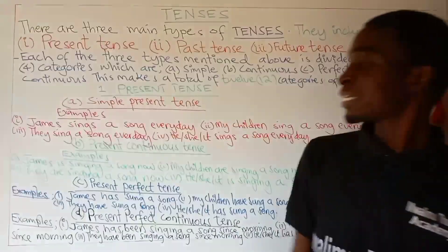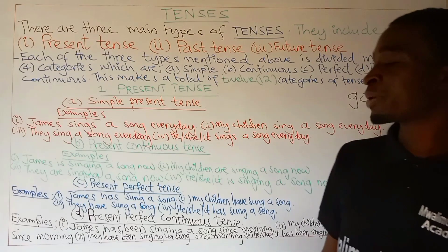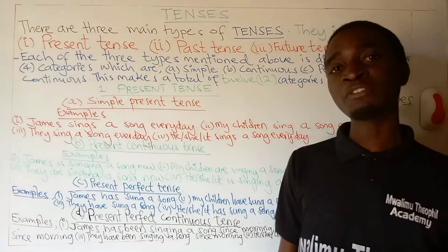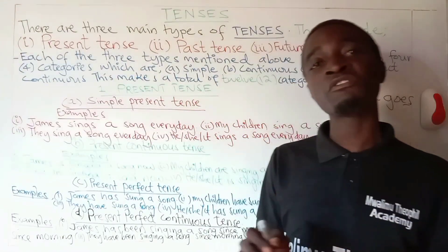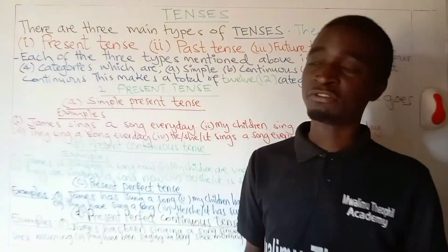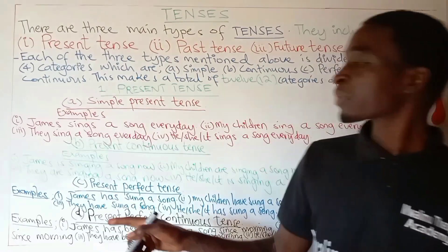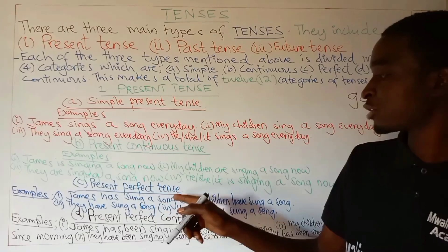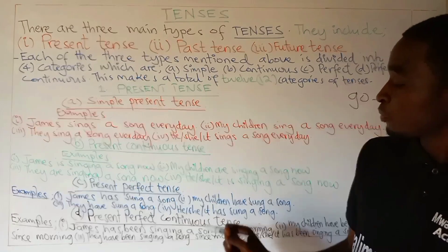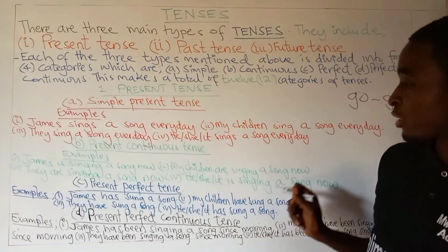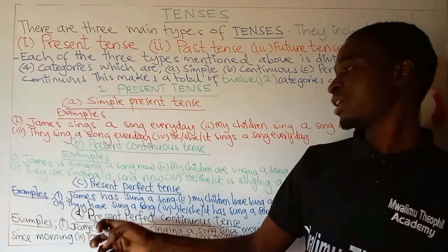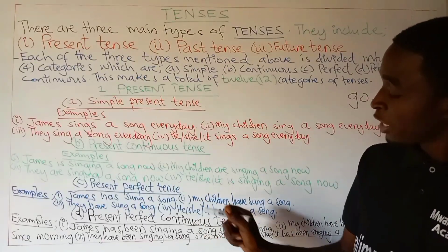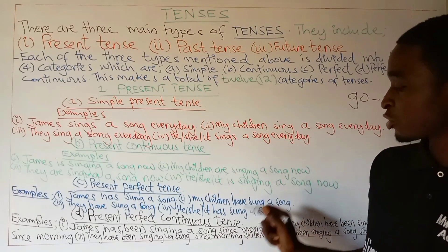Let us see the third category of present tense: present perfect tense. In present perfect tense we use the helping verb 'has' or 'have.' For example, the first sentence is: James has sung a song. Number two: my children have sung a song. Number three: they have sung a song. Number four: he or she or it has sung a song.